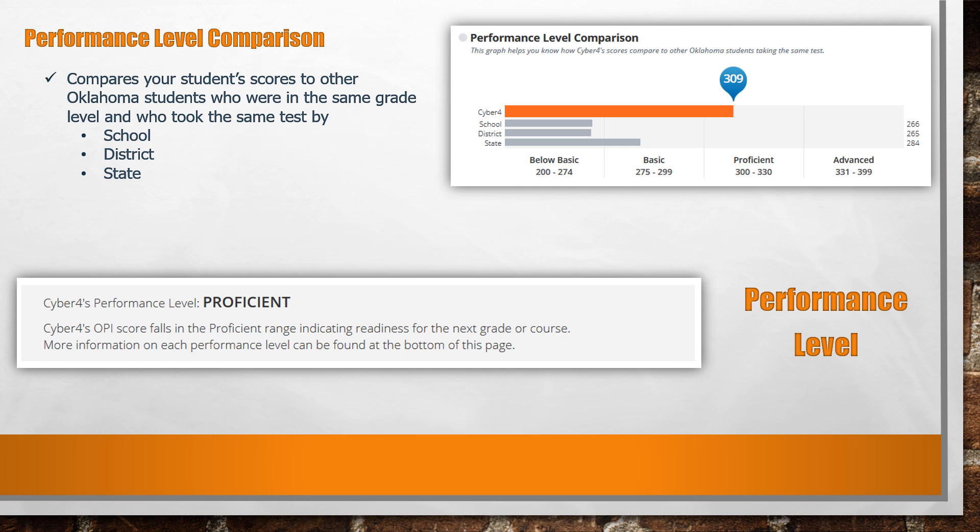The Performance Level comparison shows how your student's scores compare to other Oklahoma students who were in the same grade level and took the same test. You can compare your child's scores to other students in the school, district, and state. You can also view whether or not your child was proficient in this test and in their readiness for the next grade level or course.